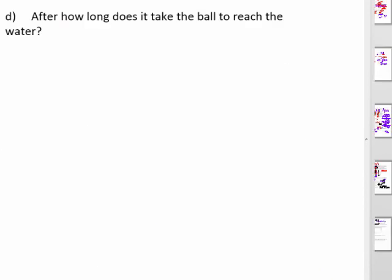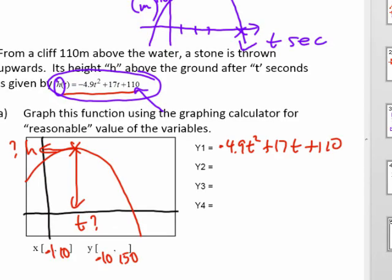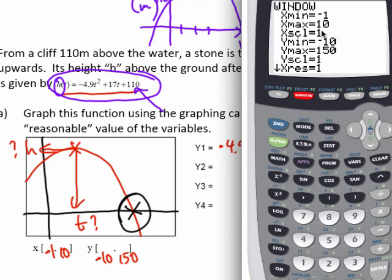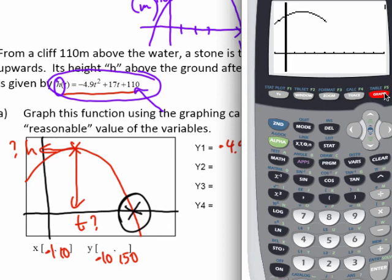And the final question is, after how long does it take the ball to reach the water? Well, if I go back to my picture. The ball is reaching the water right here, which is an intercept. A zero of the function. So I need to get that horizontal intercept. Now you'll see on my calculator that my horizontal axis is a bit hidden. So I'm just going to adjust my window. Just so that the y min is a little lower, which will show my horizontal axis up a little higher.